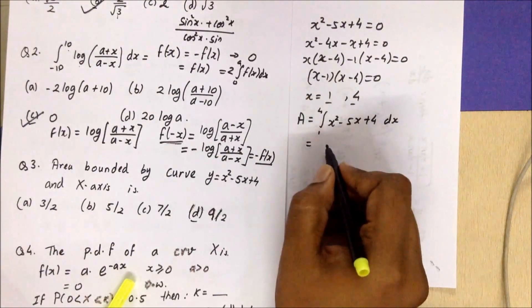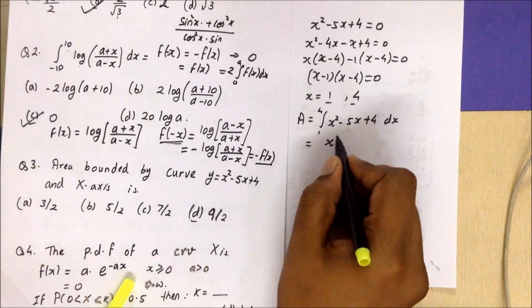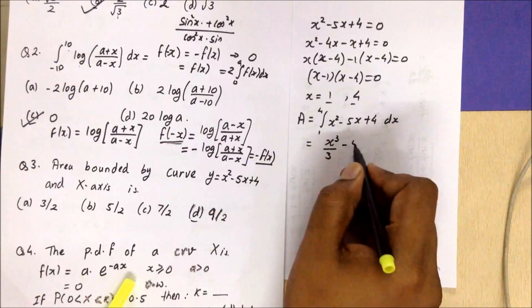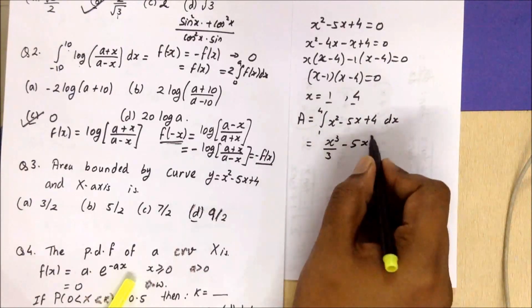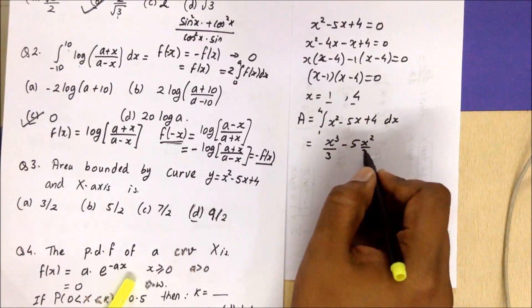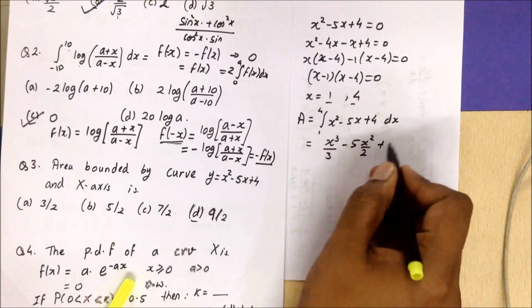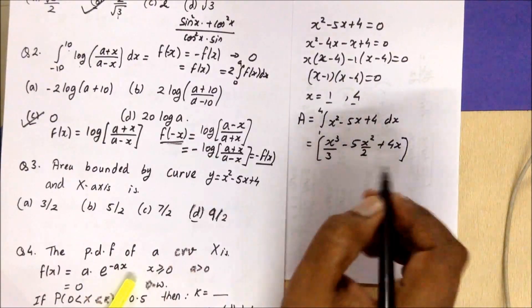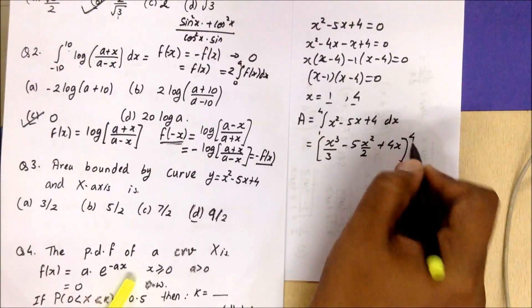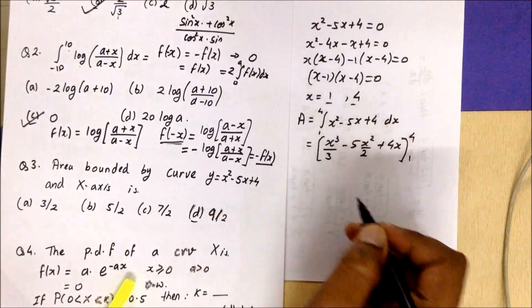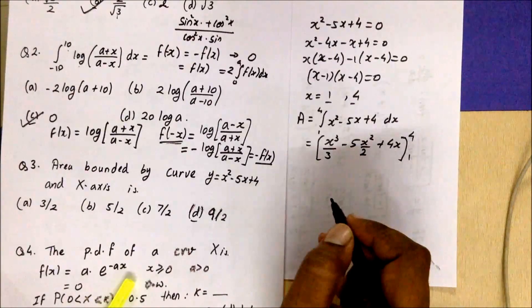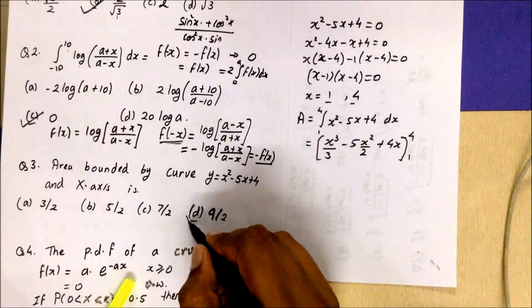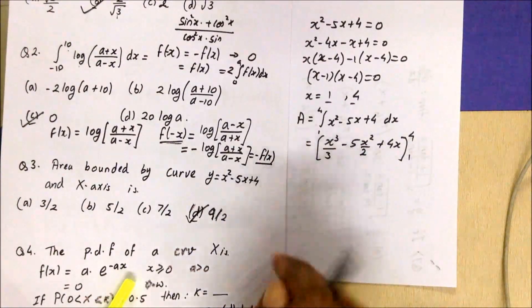Integrating: the integral of x² is x³/3, the integral of 5x is 5x²/2, and the integral of 4 is 4x. Substituting the upper and lower limits, if you calculate this particular value it comes out to be 9/2.